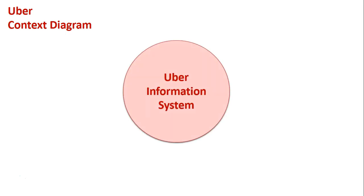We also want to highlight the different features of both types of diagrams. Let's look at Uber first in the context of a context diagram. We start every context diagram with our big circle in the middle that identifies the name of the system. In an exam situation, always write the name of the system and 'information system' underneath to highlight that it is the information system — so we're looking at the Uber Information System here.